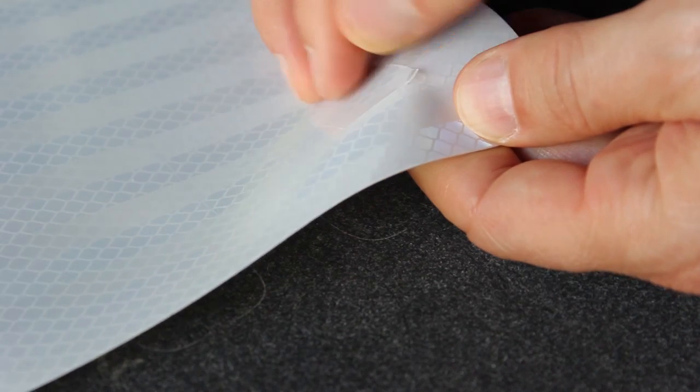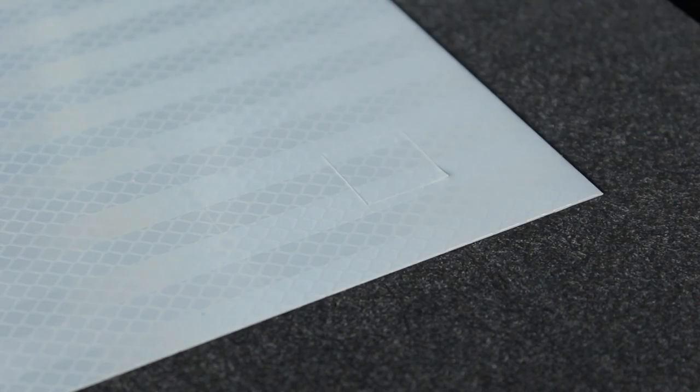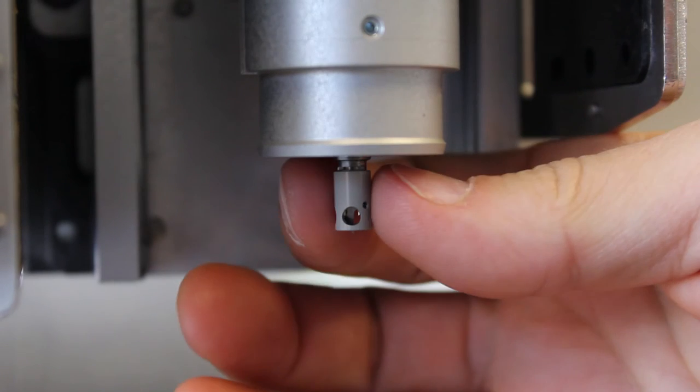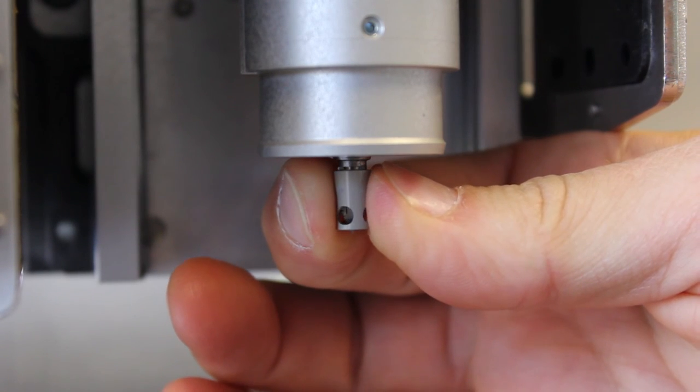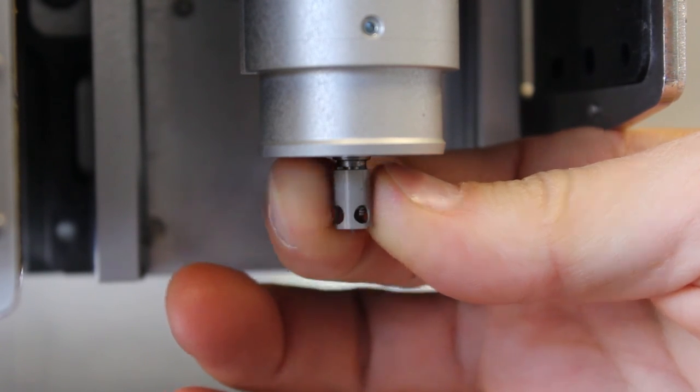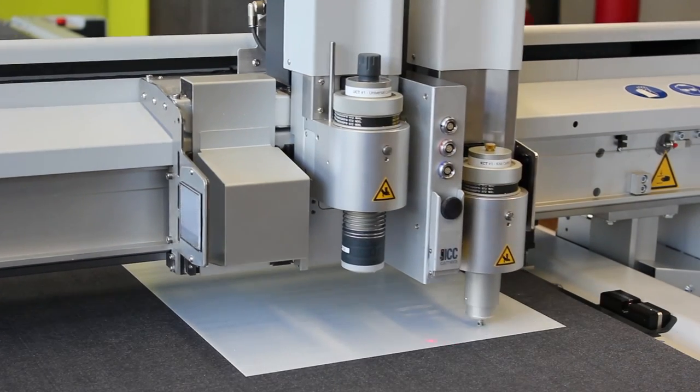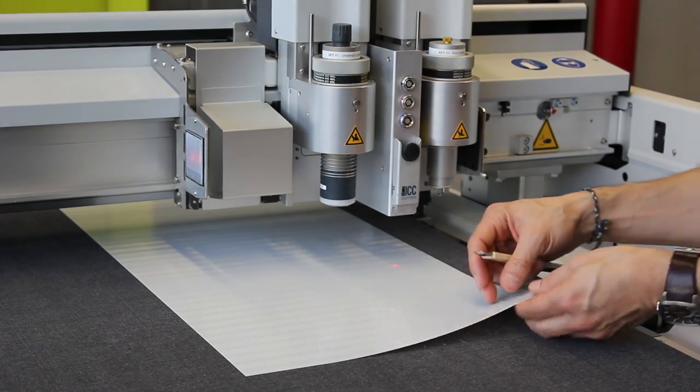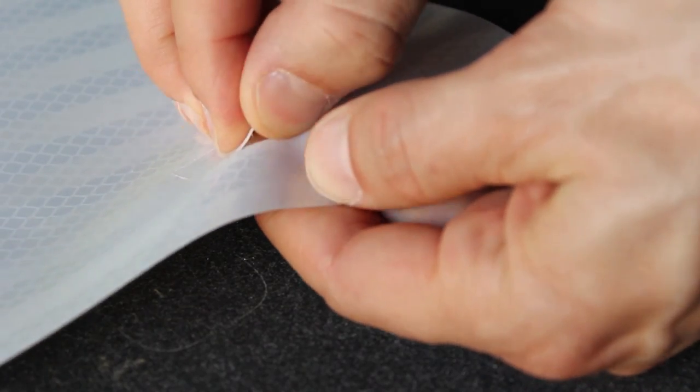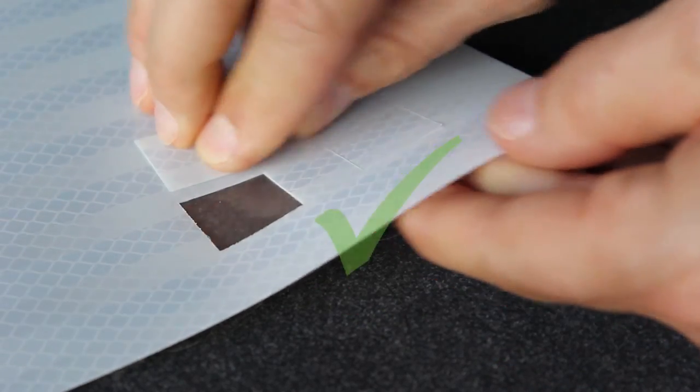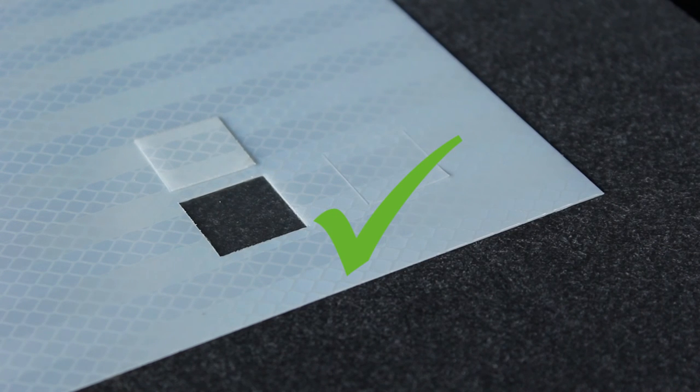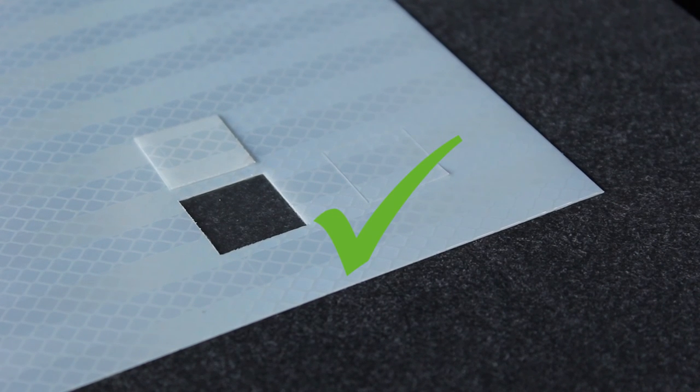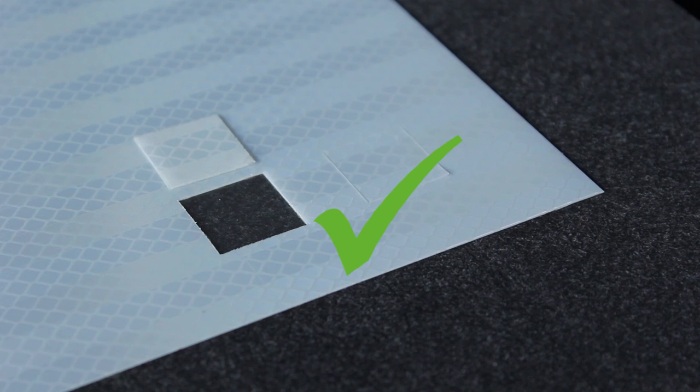On first try, the vinyl is not cut properly. Re-adjust the glideshoe. Another test cut reveals whether the settings are now correct. If necessary, keep repeating the test cut and adjusting the glideshoe until you are satisfied with the results.